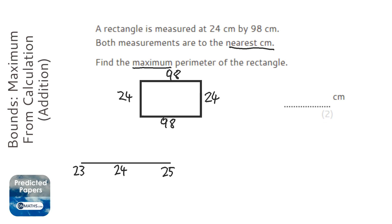Now we're asked for the maximum perimeter, so I'm interested in the maximum it could have been. So we find the halfway between 24 and 25 which is 24.5. Now you might be tempted to write 24.49 recurring, that is the same as 24.5 so just stick with 24.5.